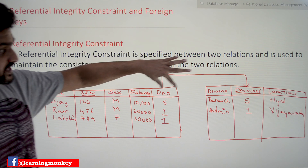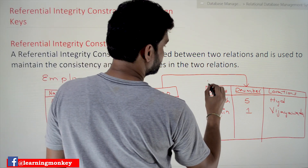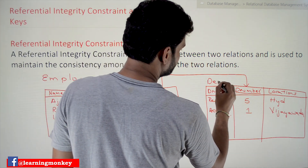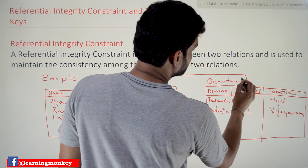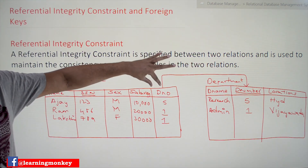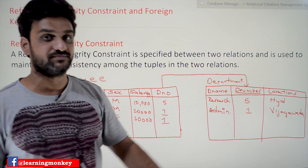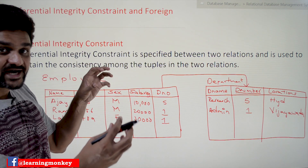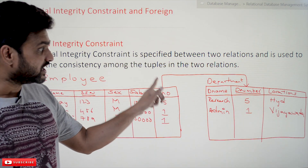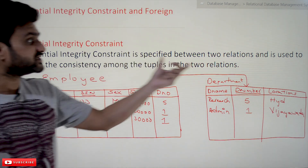We have already created the employee and the department table in our previous videos, but the relationship between them has not been established yet. The referential integrity constraint is always maintained between two tables. Here, the D number column is referencing the values in this column of the department table. Whenever such references are made, that kind of constraint is what we call a referential integrity constraint.